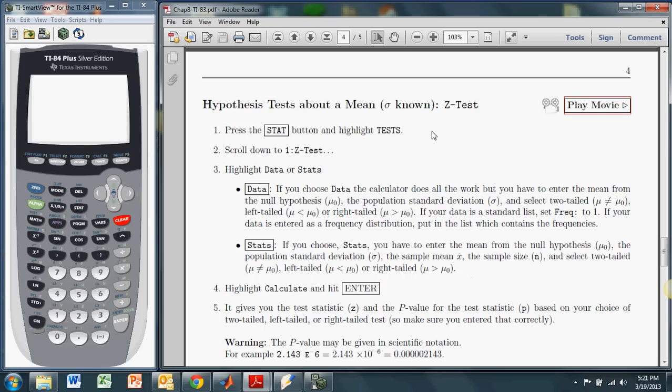Only in this case, the standard deviation, the population standard deviation sigma, is assumed to be known. And this doesn't happen very often, but it could, I suppose. And when that is the case, we actually use a Z-distribution, and the name of the function in the TI is called Z-test, appropriately so.